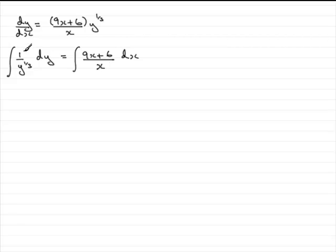Now that we've got that, we need to integrate. I can say that this is the same as the integral of y to the minus third with respect to y. And on this side, let's just leave this as it stands: 9x plus 6 over x with respect to x.